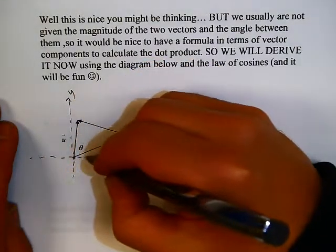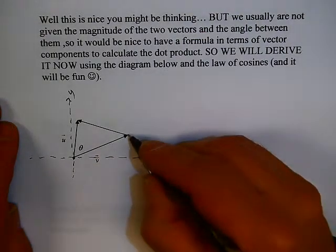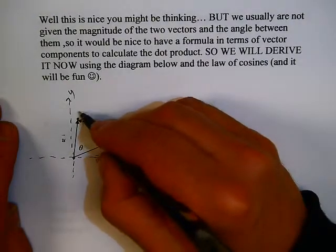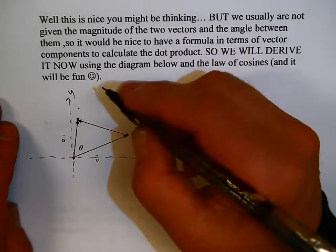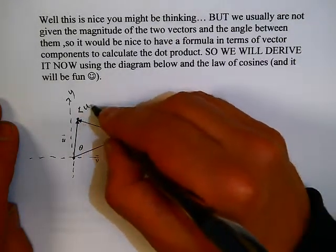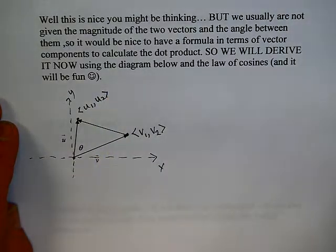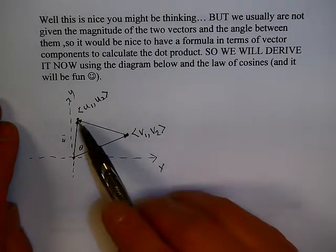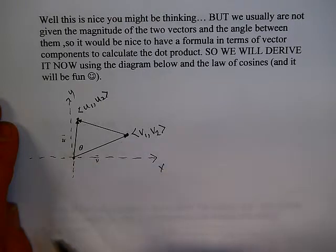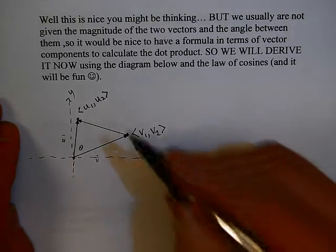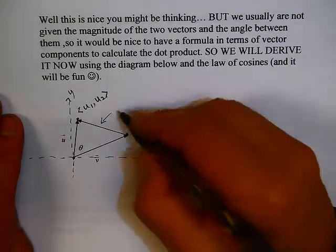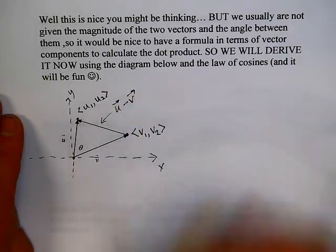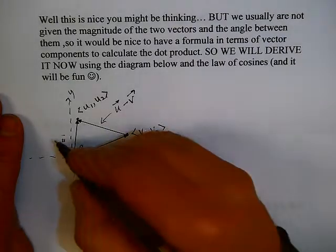Let's suppose this is the origin, with the y-axis and the x-axis. Let's call vector v: v-sub-1, v-sub-2, and vector u: u-sub-1, u-sub-2. You can think about this vector from here to here as u minus v. So this vector right here is u minus v.